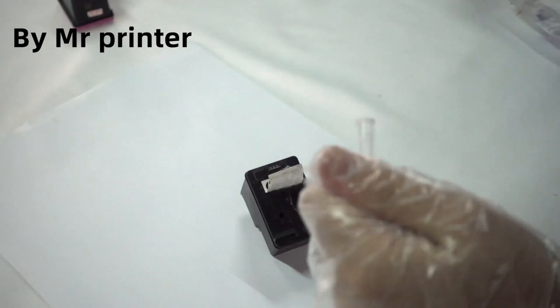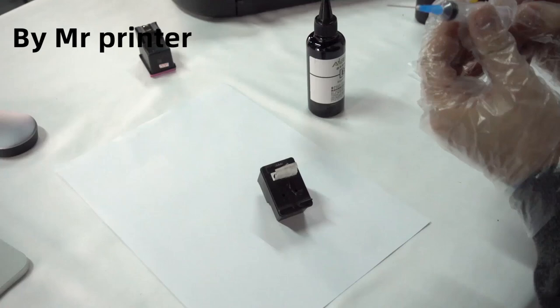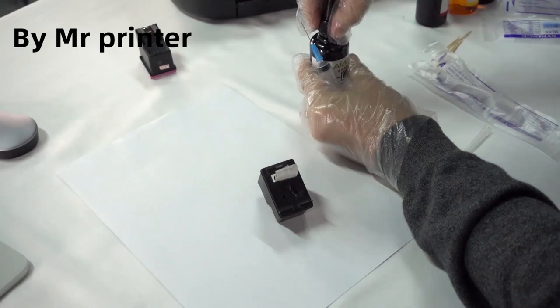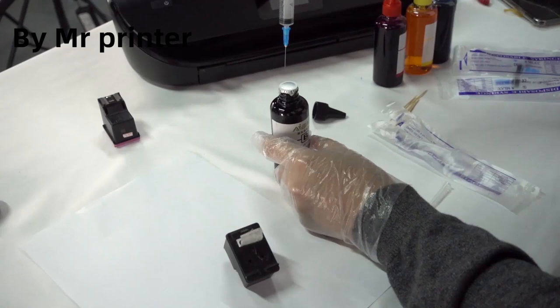And then we take our black ink and fill up the syringe. 10 milliliters. We open the ink and we don't need to open the cap, we just stick it in and fill the syringe.